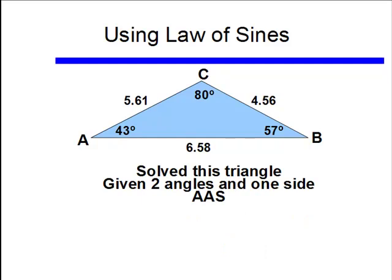So we have solved this triangle, given two angles and one side, and this was in the AAS form, that is we had 43 degrees, 57 degrees, and 4.56. So that was what we originally had.